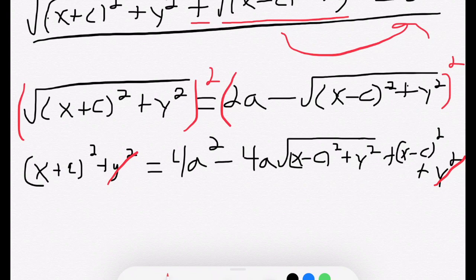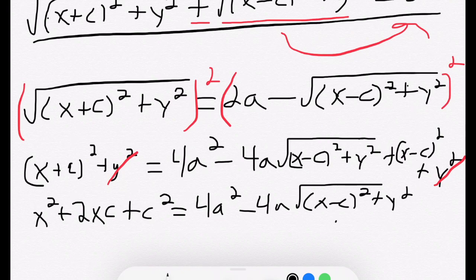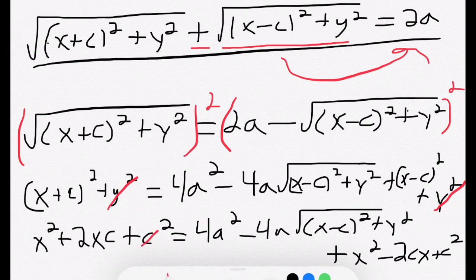So what I'm going to actually do is, before that, I'm going to expand these squares, so it's going to be x squared plus 2xc plus c squared equals 4a squared minus the square root term plus x squared minus 2cx plus c squared. The reason I expanded those squares out is we should see that there's some terms that we can cancel out, an x squared and a c squared from both sides.